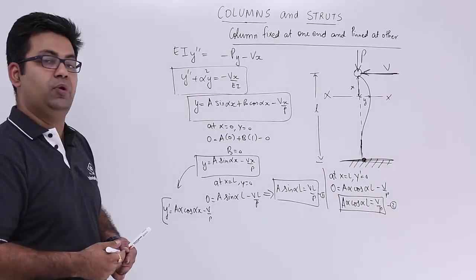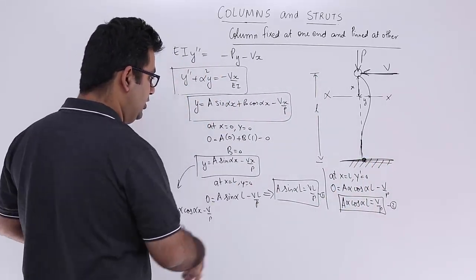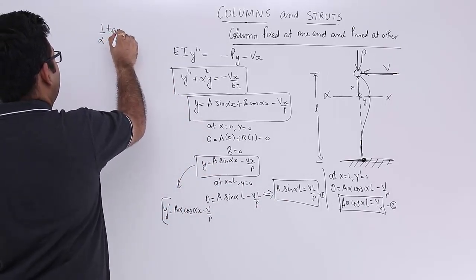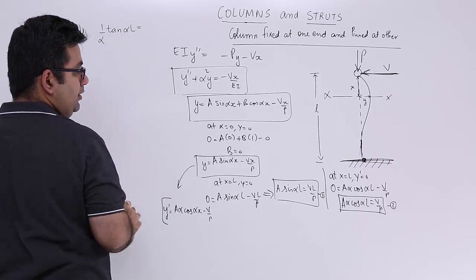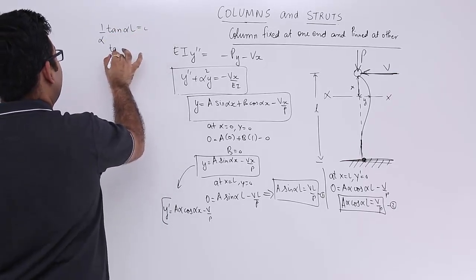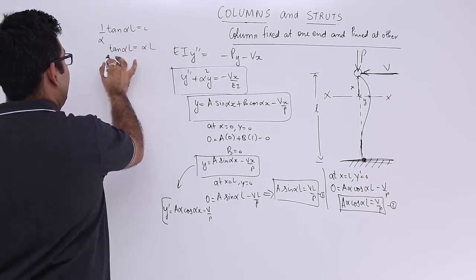So you can divide these two equations. So when you divide them you get 1 upon alpha into tan alpha l is equal to l. So tan alpha l is equal to alpha l.